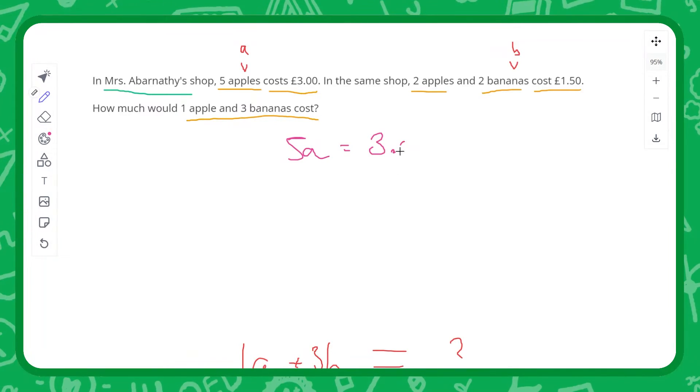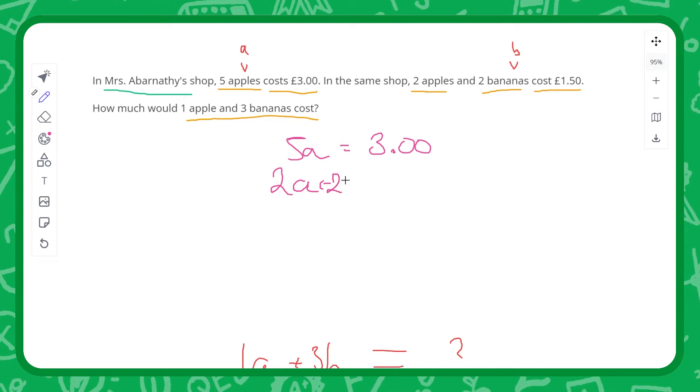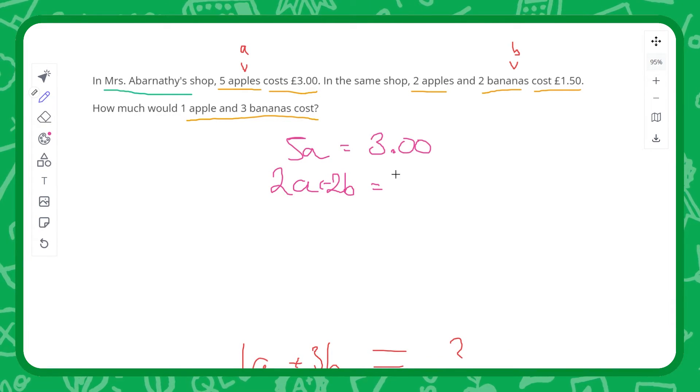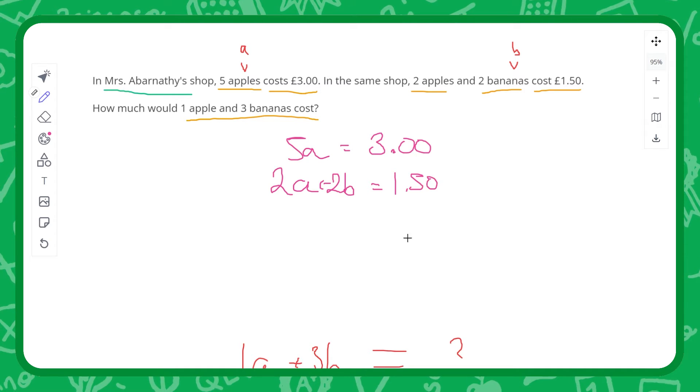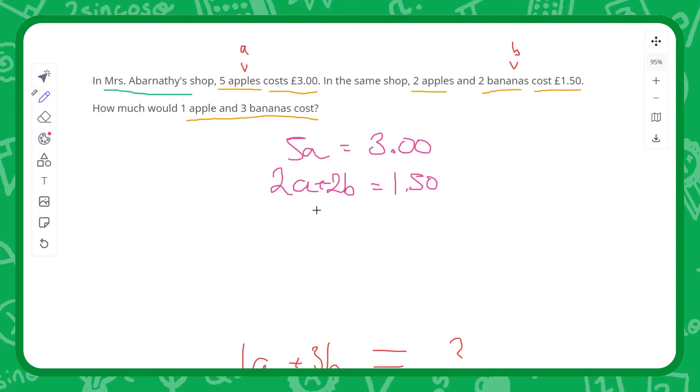Just for the sake of argument though, I'm going to keep this in terms of pounds because that's probably what most people would do. Then we've got two apples and two bananas end up costing 1.50, so I'll write that as 1.50.